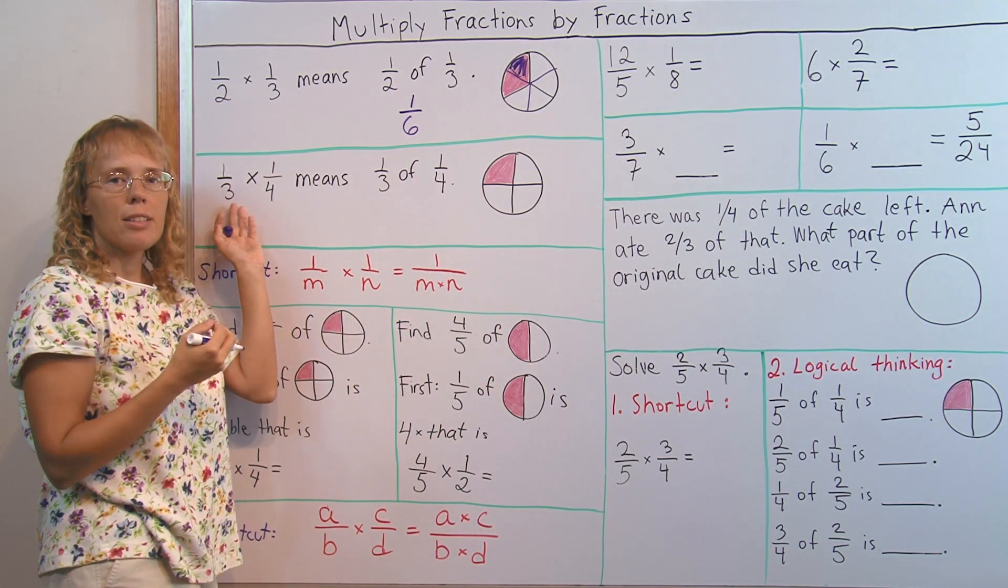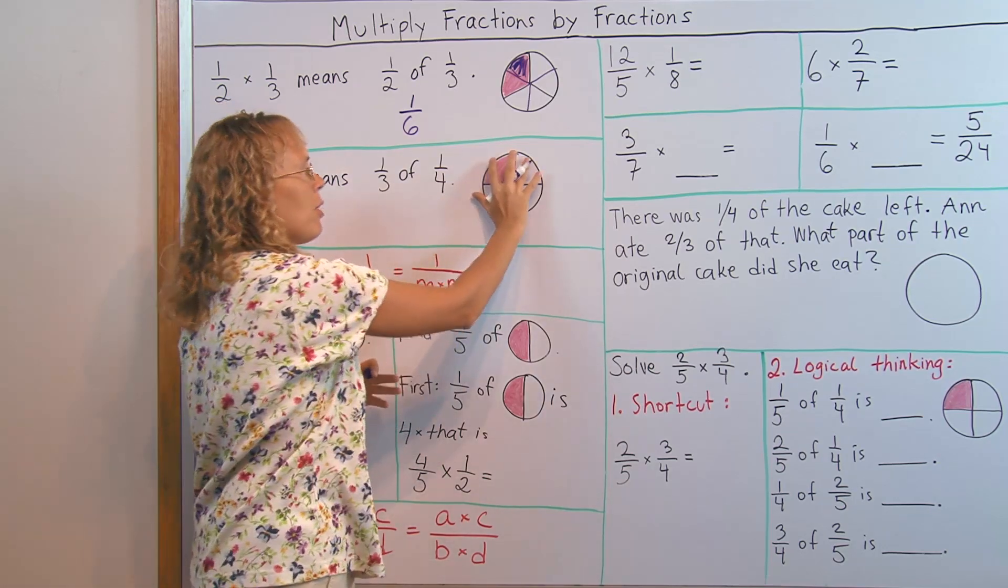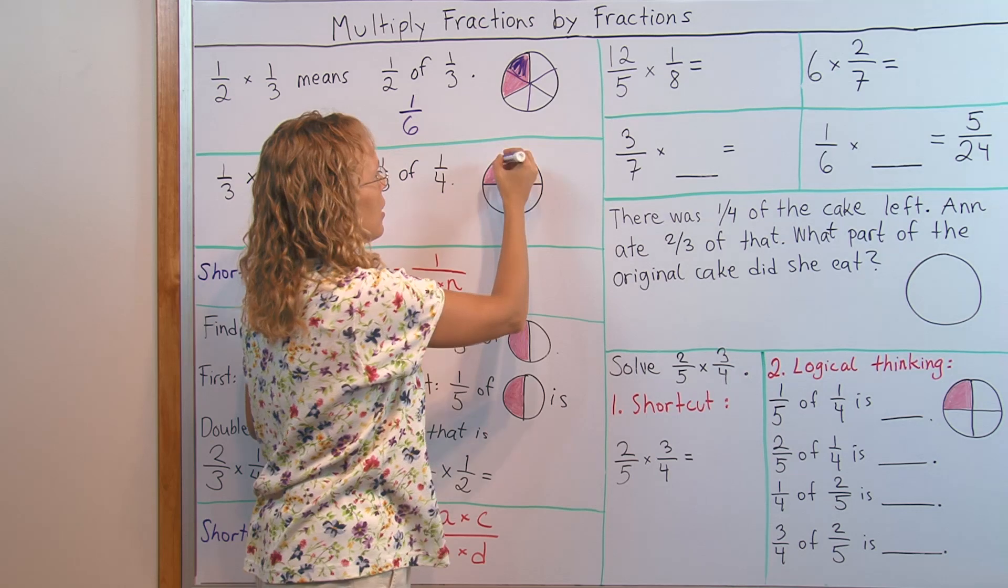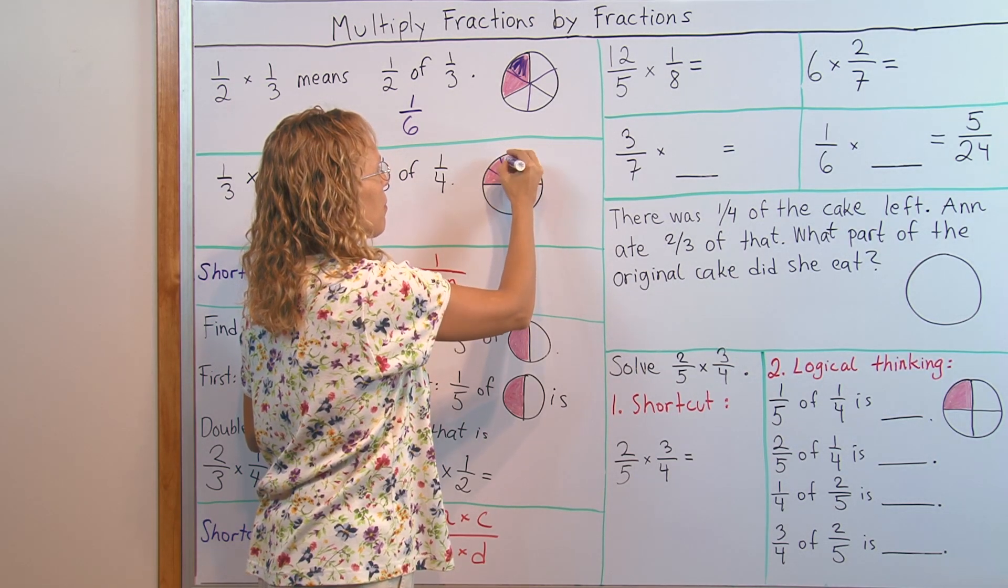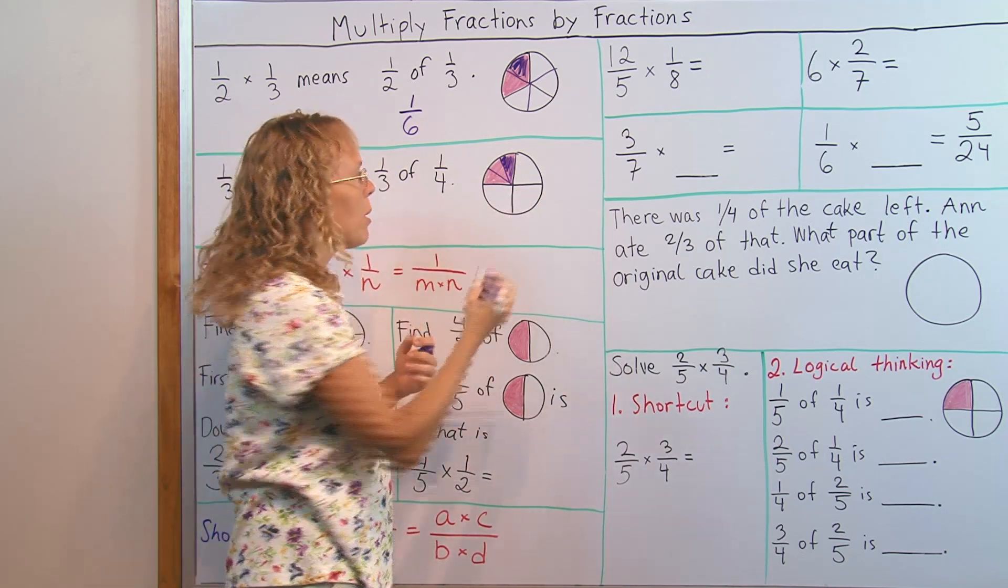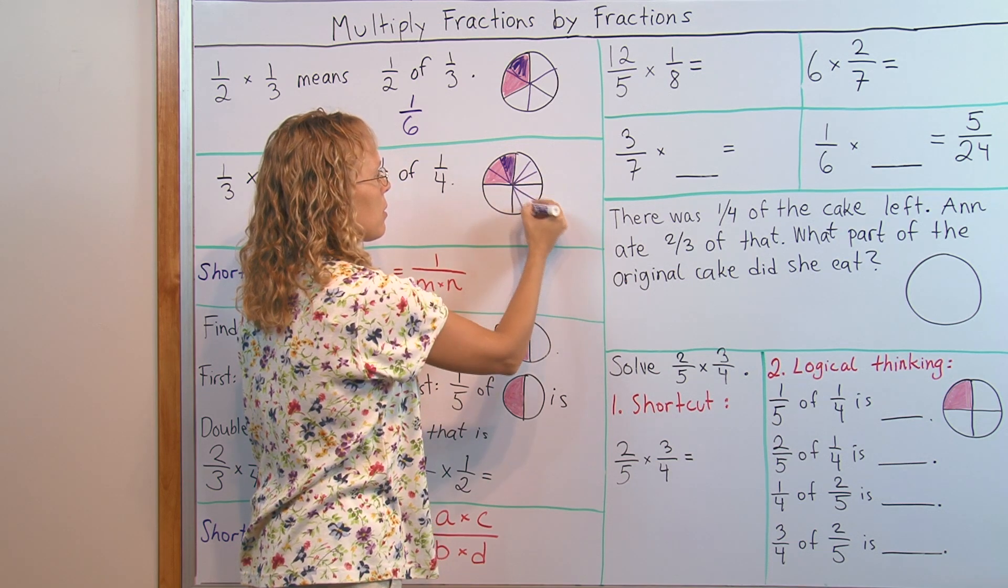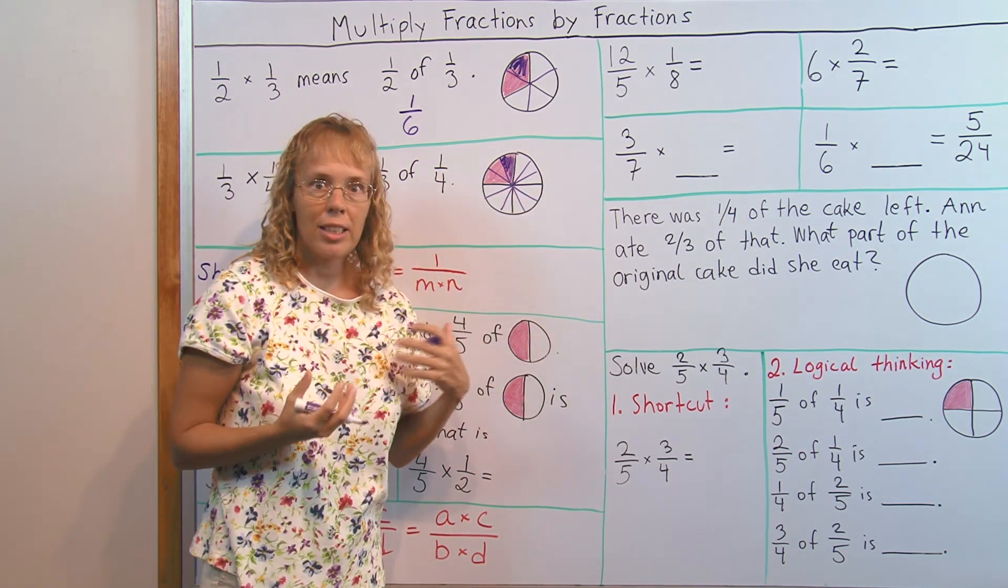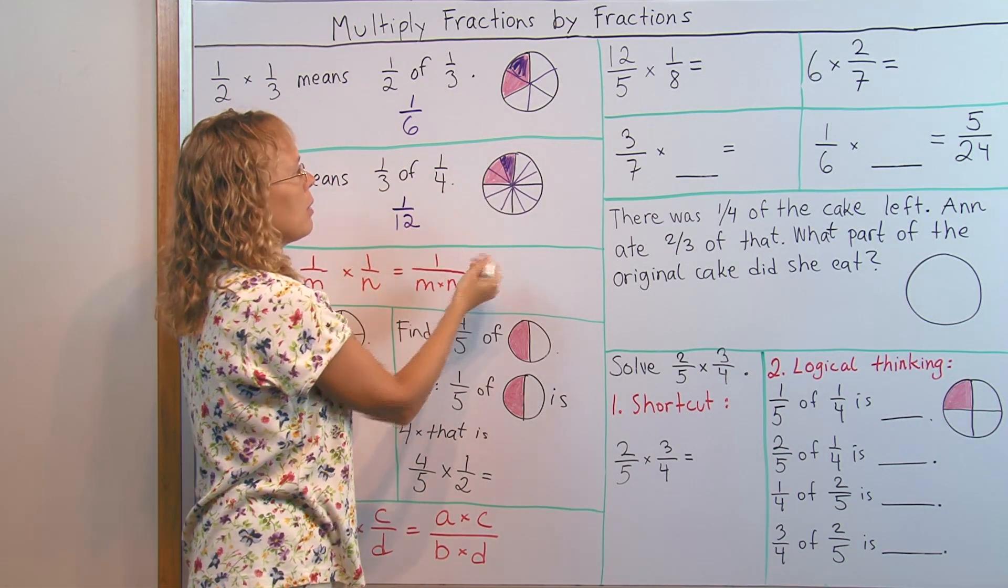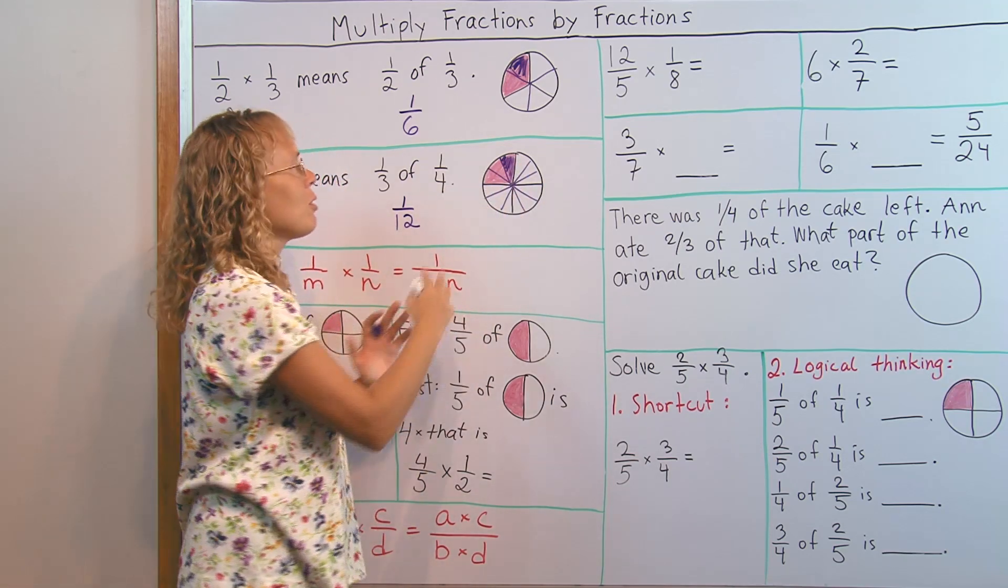Another example: one third times one fourth. It means one third of one fourth. One fourth of a pie, I'm gonna eat one third of the remaining pie. So I divide this remaining piece into three new pieces and this is what I eat. To see what part it is of the original pie, I divide this into three pieces too. Now I can see that there's 12 equal size pieces, and so this is one twelfth. Because there was four pieces, each one divided into three new ones. Four times three is twelve.